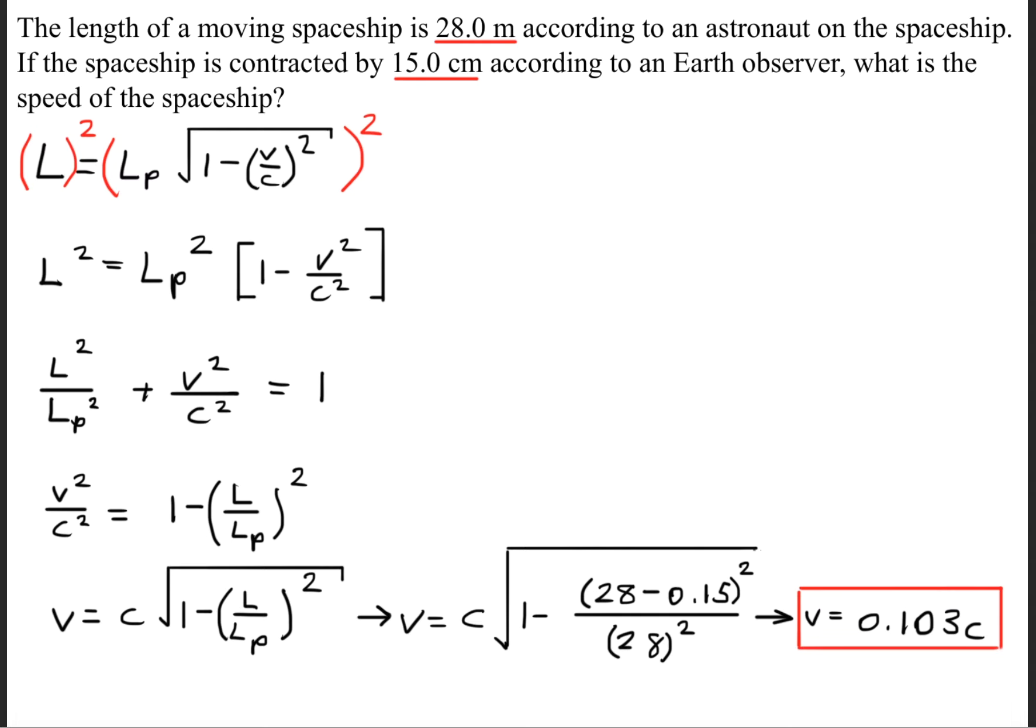You don't need to actually expand the speed of light variable. We don't need to multiply by 3 times 10 to the 8 meters per second. We can simply leave it in this reduced form.